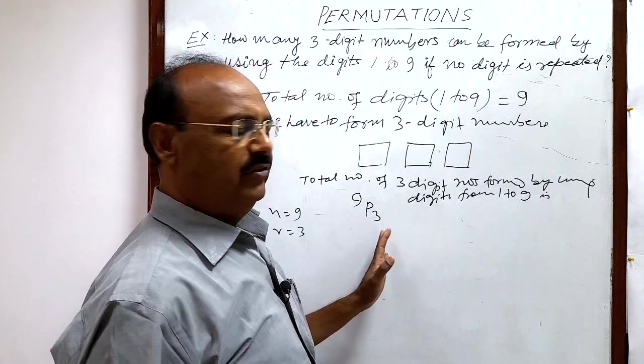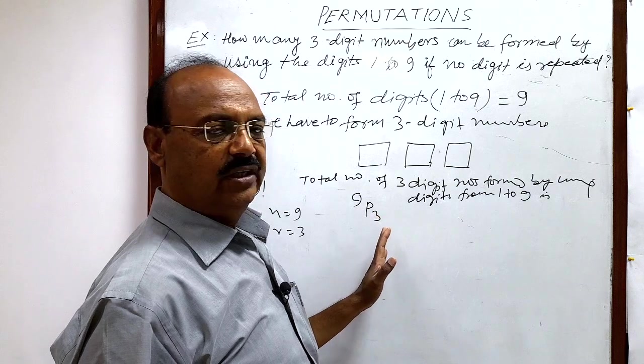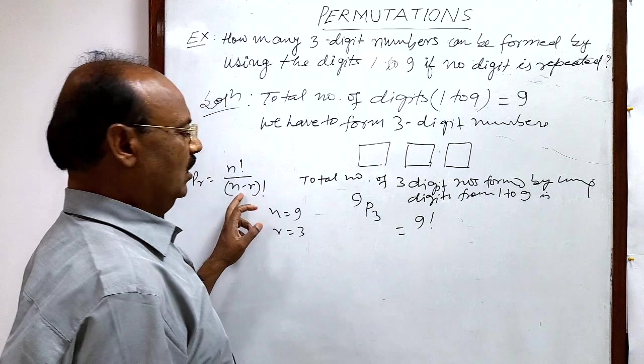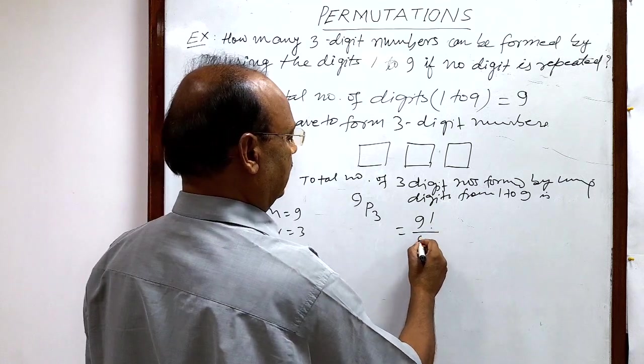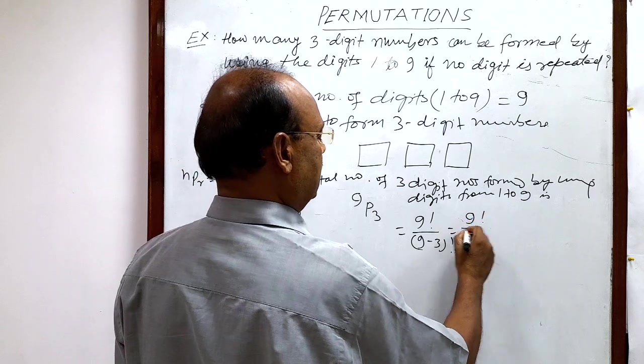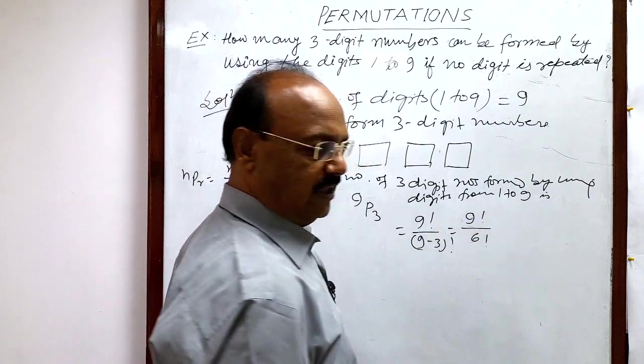Now we will evaluate it. 9P3, with the help of this formula, is 9 factorial divided by (9 minus 3) factorial, which is 9 factorial divided by 6 factorial.